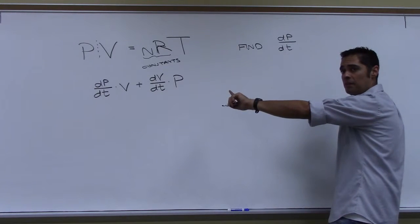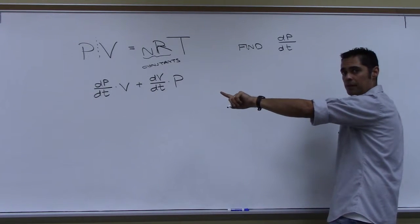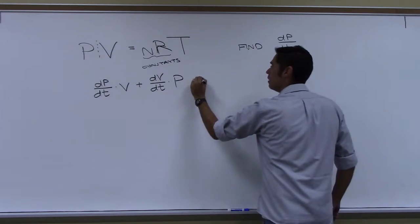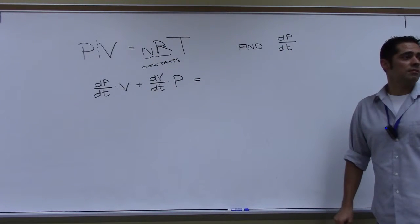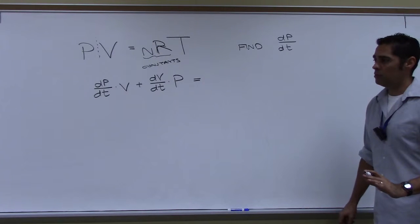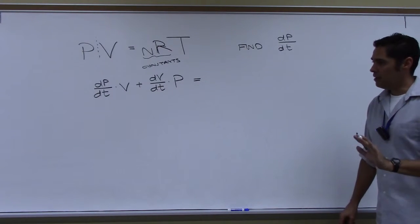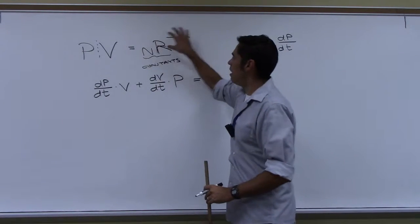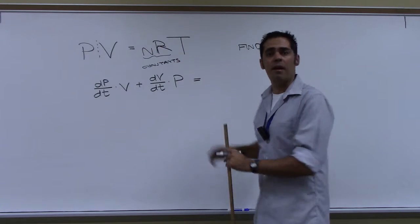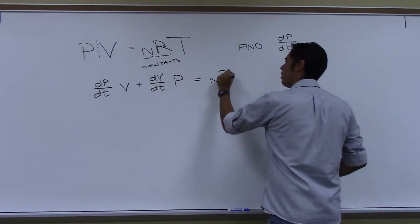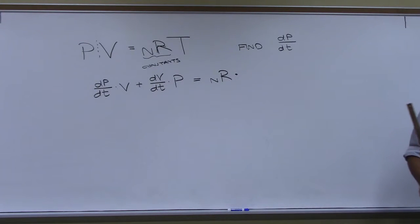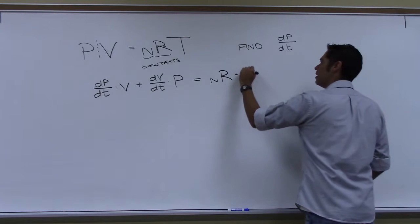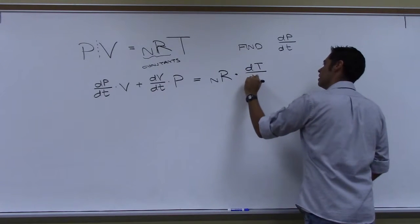Am I done with the left side? Yes. Right side — n and R are constants. I do not need to apply the product rule, because the derivative of a constant times a function means the constant comes along for the ride. So this is just n capital R times the derivative of capital T with respect to little t, dT/dt.